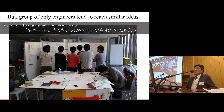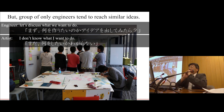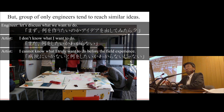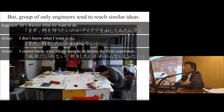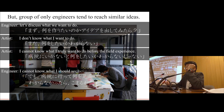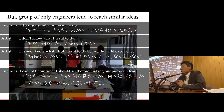The engineer said, let's discuss what we want to do. But the artist said, I don't know what I want to do. Some people talk about: I cannot know what I truly want to do before the field experience. And then the engineer says, I can't know what I should see before making our purpose clear.